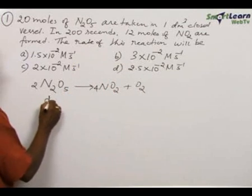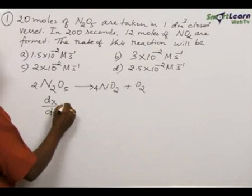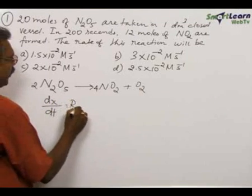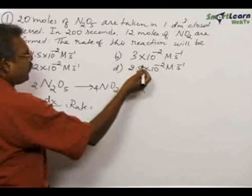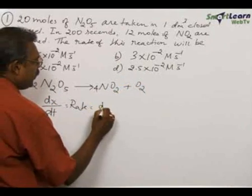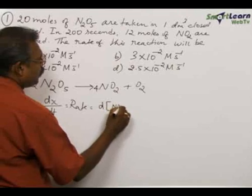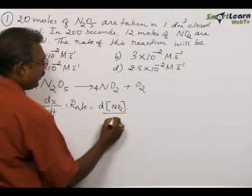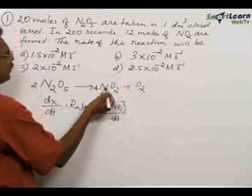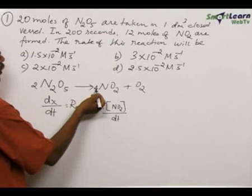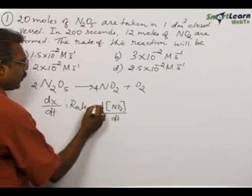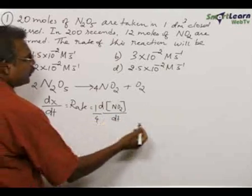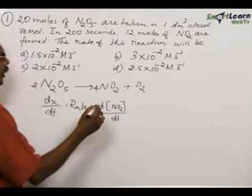Rate law: dx/dt is equal to the rate. We can write in differential form that is product formation, plus d[NO2]/dt. Since the stoichiometric coefficient is 4 moles, that is taken as the reciprocal 1/4. This is equal to the rate.